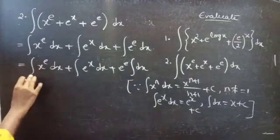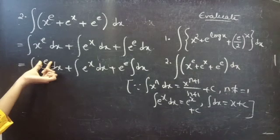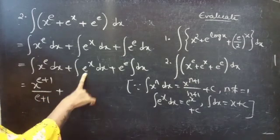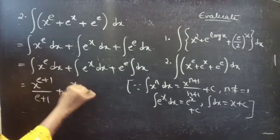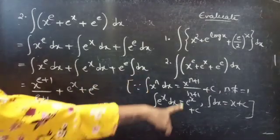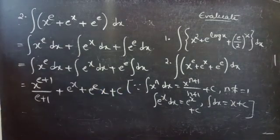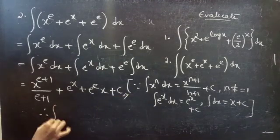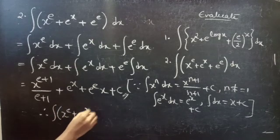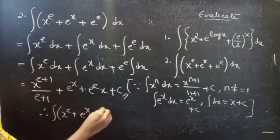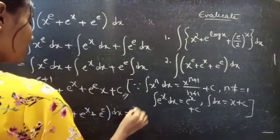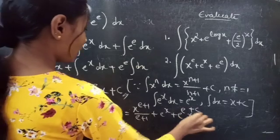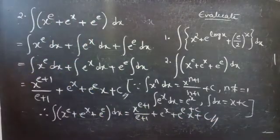Here in the place of n you have e, which is a constant, so you can write it as x power e plus 1 by e plus 1. The integral of e power x dx is e power x. e power e is constant and integral of dx is x plus constant c. Therefore, the integral of x power e plus e power x plus e power e into dx equals x power e plus 1 by e plus 1 plus e power x plus e power e into x plus c. This completes the second problem.